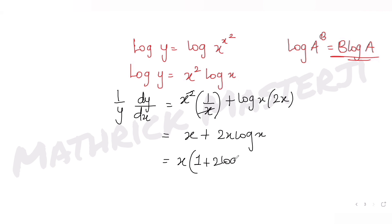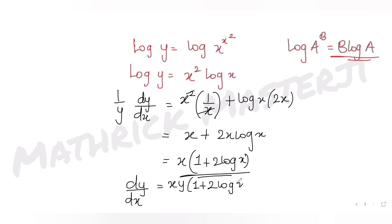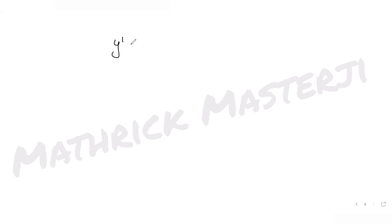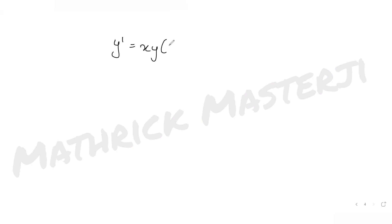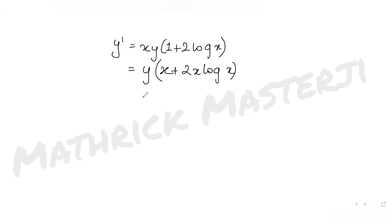Simplifying the right side: x² · (1/x) = x, so we get x + 2x·log x. Taking x common gives x·(1 + 2·log x). Therefore dy/dx = y · x · (1 + 2·log x), which I can also write as y·(x + 2x·log x).